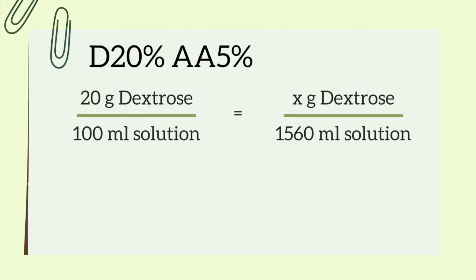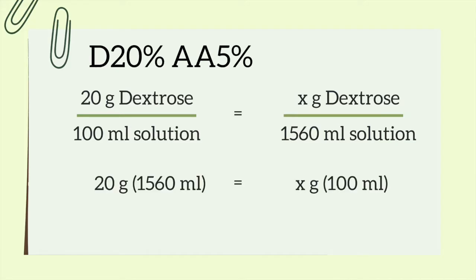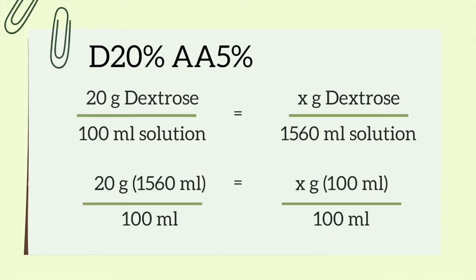Now we can figure out how many grams of dextrose we'll have. This time the milliliter solution will be our known variable. To set up the calculations for a D20 solution: 20 grams of dextrose over 100 milliliters of solution equals X over 1,560 milliliters. Then we cross multiply and divide both sides by 100 milliliters. That gives us 312 grams of dextrose.